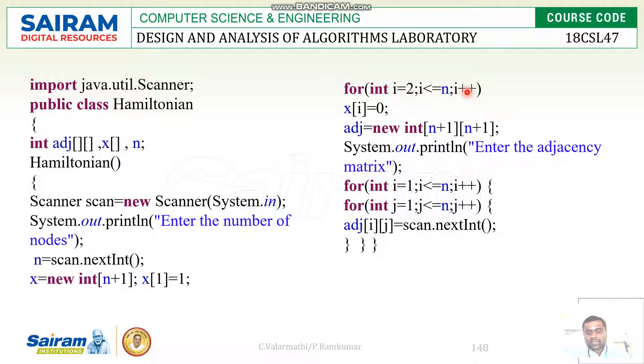So we have to avoid such a thing. In order to avoid the self-loop, we have to assign all the diagonal elements as zero.